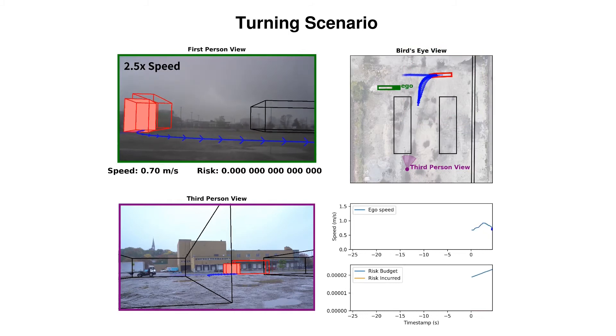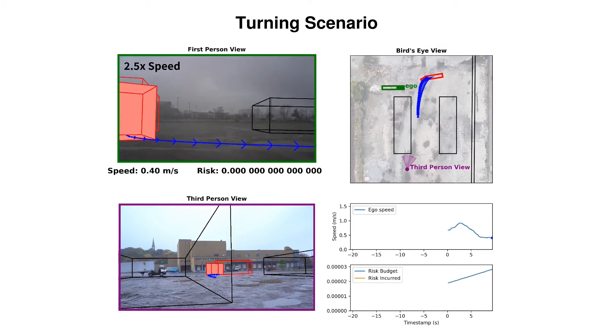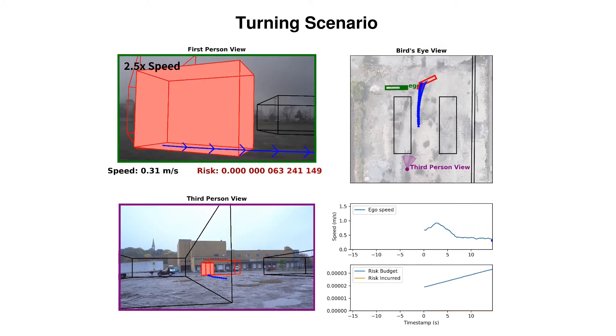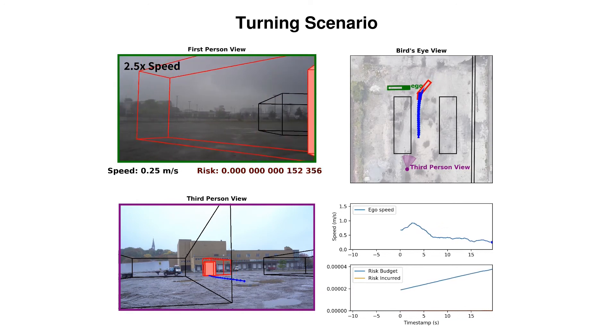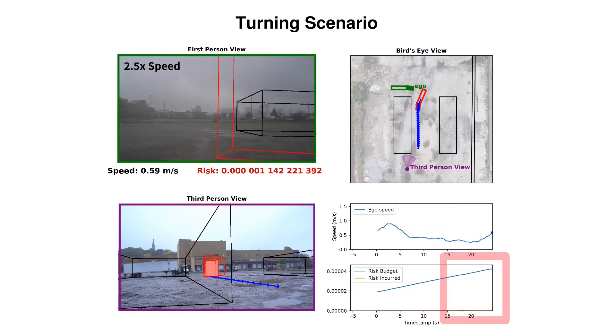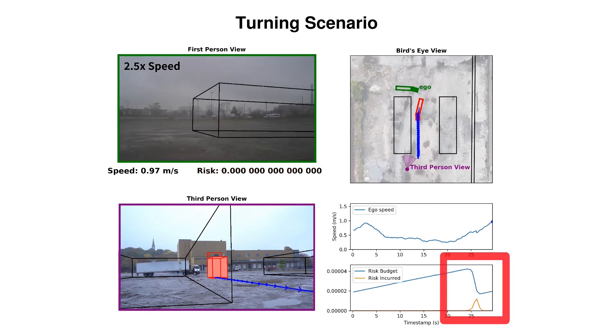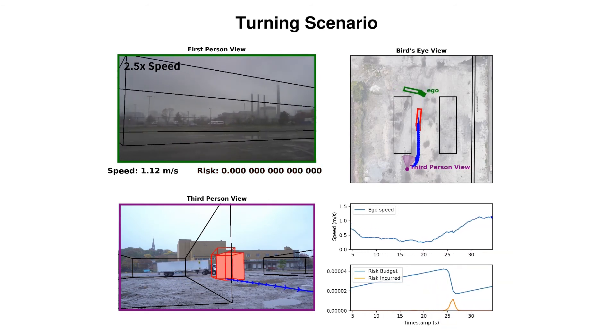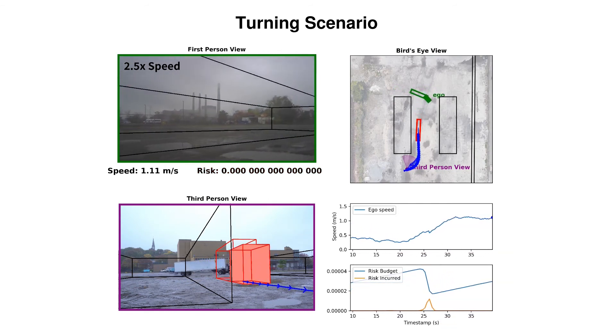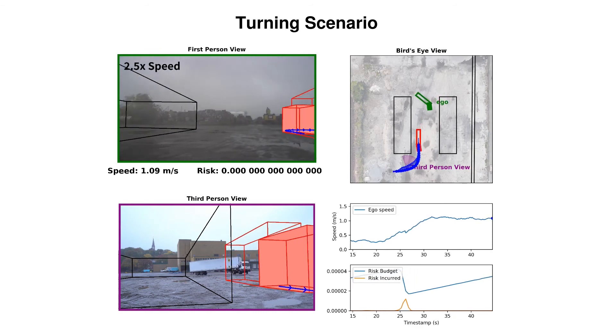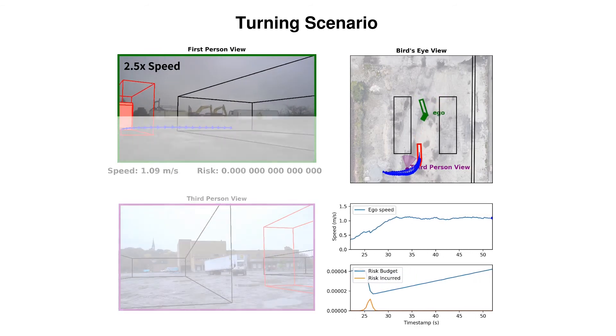Here is a trial in which the other tractor-trailer turns left in front of us. The dynamic risk budget decreases as we near the other vehicle, reflecting the risk our vehicle incurs. By maintaining the risk budget over time, the system guarantees a hard constraint on the probability of collision.